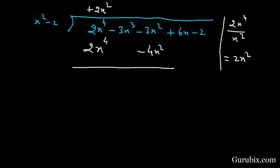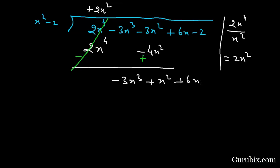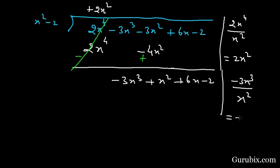We write the terms under the same power of the variable, then change the sign of these terms. After cancellation we have minus 3x³ plus x² plus 6x minus 2. To find the next term in the quotient, we divide minus 3x³ by the first term of the divisor, x², which gives minus 3x.